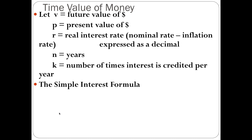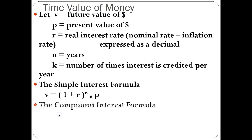There are two formulas. The simple interest formula is: V equals (1 plus R) to the N, times P. The compound interest formula is: V equals (1 plus R over K) to the N times K, times P — where K is the number of times interest is credited per year.